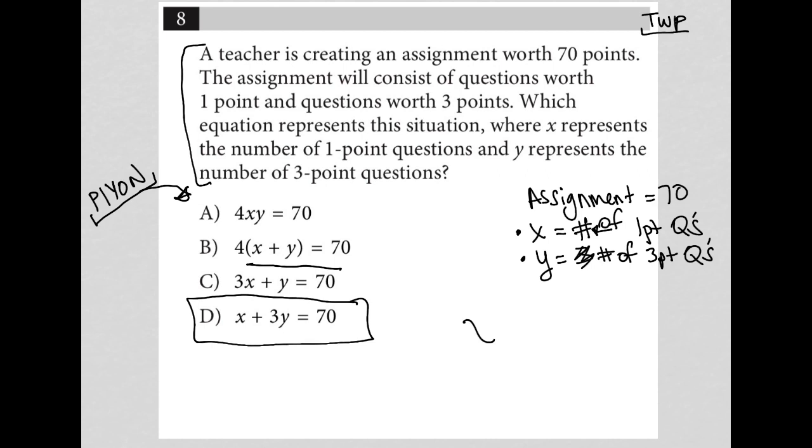So I'm going to have X one point questions, right? So however many I have, 20 of those, 30 of those, whatever it is, plus I'm going to multiply the number of three point questions by three, right? Three times Y, because that'll give me the total number of points associated with the three point questions.